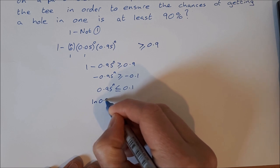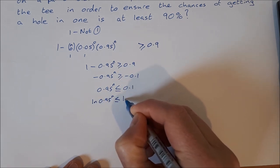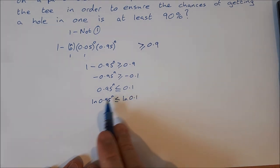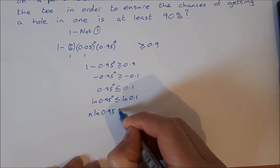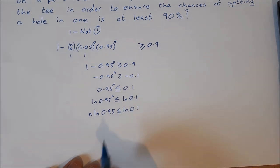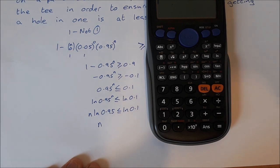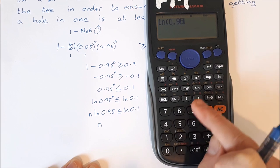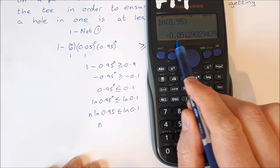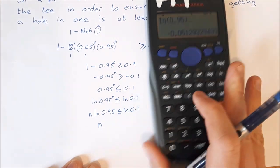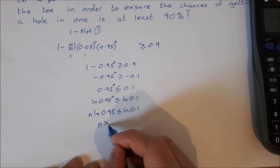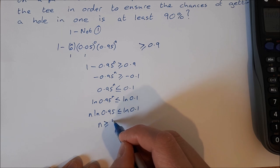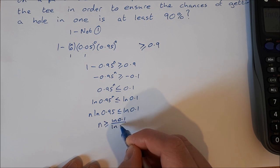To get n out of the exponent, we take the natural log of both sides: ln(0.95^n) ≤ ln(0.1). By the laws of logs, we bring n in front: n × ln(0.95) ≤ ln(0.1). Now, ln(0.95) is a negative number, so when we divide both sides by it, we must flip the inequality sign again. This gives n ≥ ln(0.1) divided by ln(0.95).